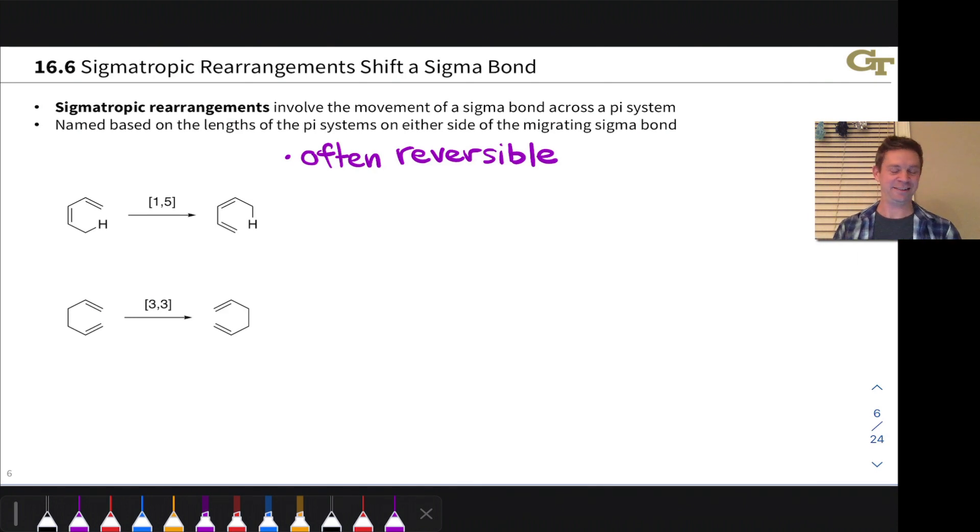These reactions are often reversible because there's no net cleavage or formation of sigma or pi bonds. So any bias in one direction or another is going to come down to, for example, creating a more substituted double bond or a polarized double bond that's stronger than an unpolarized double bond that we start with in the starting materials or something along those lines.